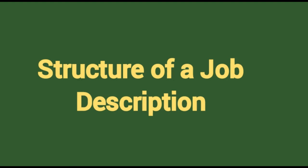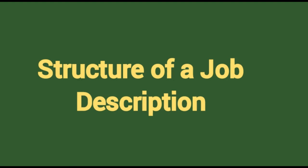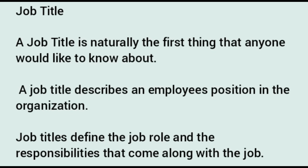A well-rounded JD is generally structured as follows. First, job title — naturally the first thing anyone wants to know about a job. The title describes an employee's position in the organization and defines the job role along with its responsibilities. Second, job summary — it gives an overview of the JD and is basically a shorter version of the detailed description, so people get an idea about the job without going through the whole document.